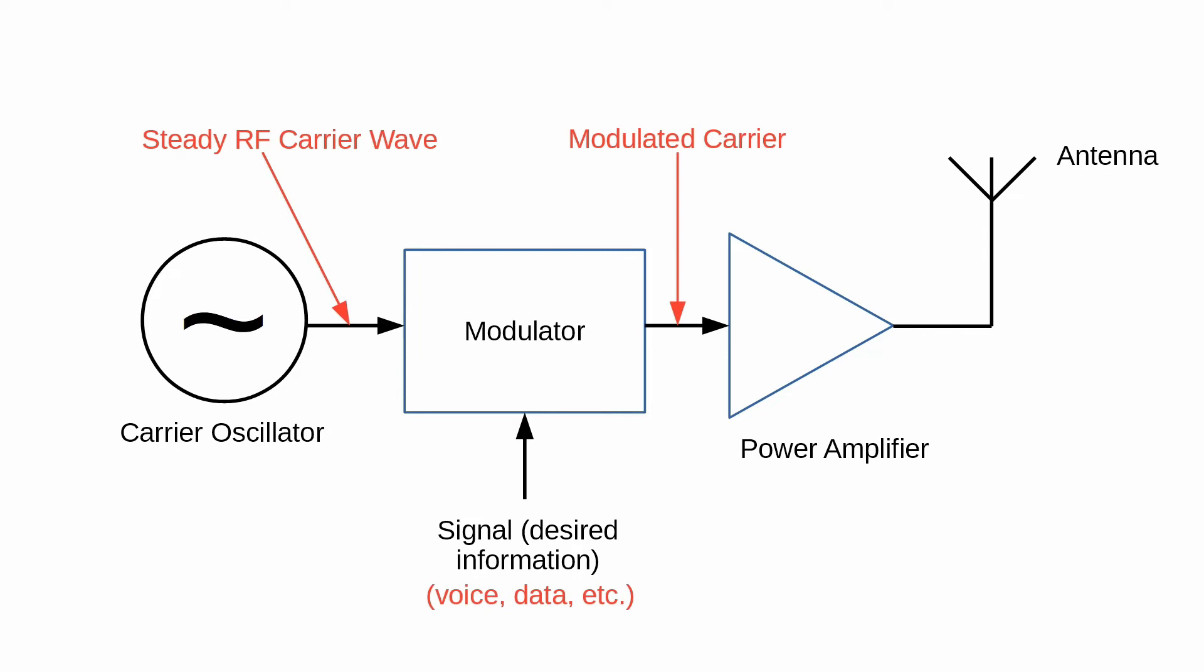That way, in an appropriate receiver for that form of modulation, you get the signal, meaning what you want to hear. The basic radio wave that carries the modulated information is called, appropriately enough, a carrier.